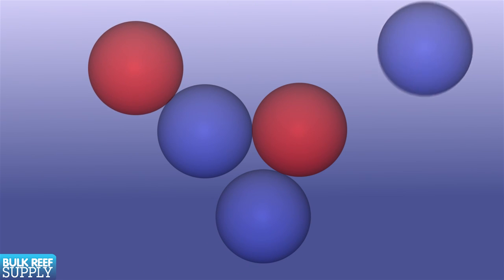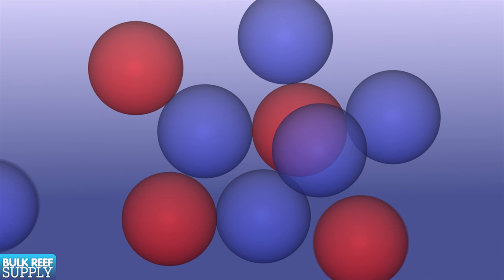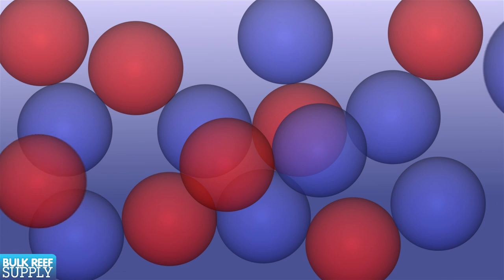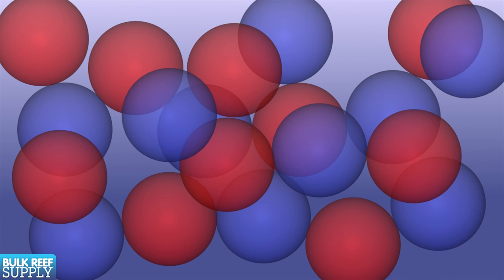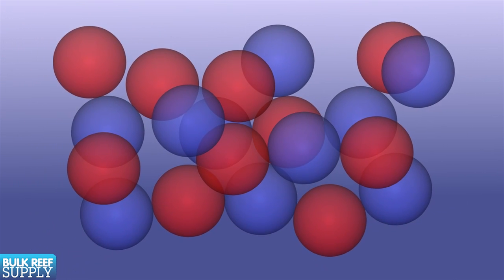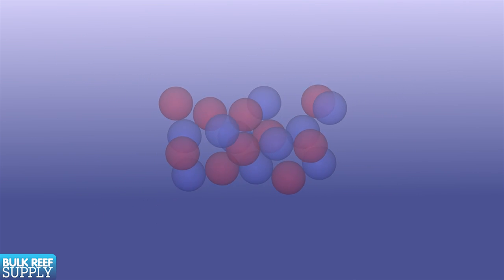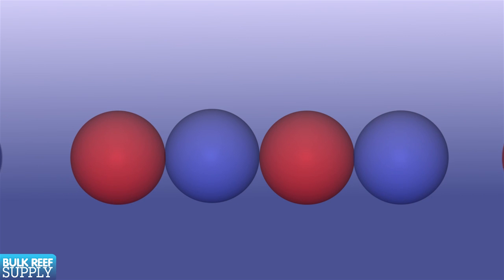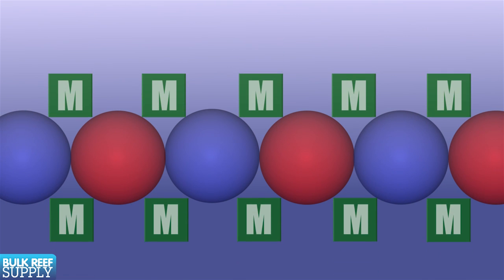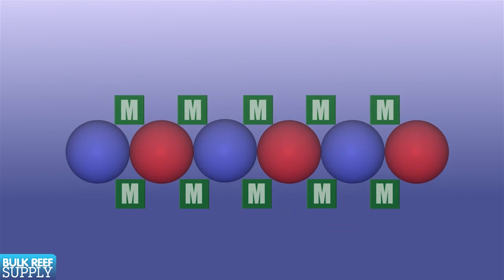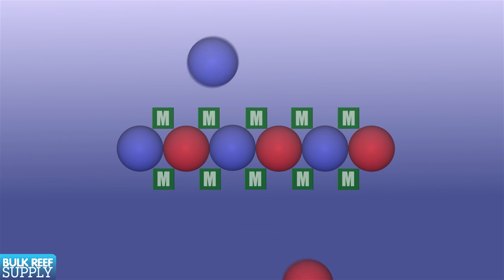They can and will find each other in the water column and form tiny calcium carbonate crystals. These newly formed crystals are very attractive to other calcium and carbonate ions so the crystal grows. This basically forms tiny specks of sand which permanently removes these elements from the water and reduces the volume of calcium and carbonate ions available for coral growth. Basically magnesium's role is to prevent this from happening by making it more difficult for the calcium and carbonate ions to find each other. Magnesium does this by incorporating itself into the surface of the free calcium carbonate crystals in the water column and makes it much less attractive to new calcium and carbonate ions.